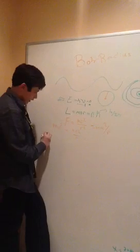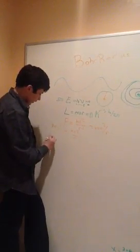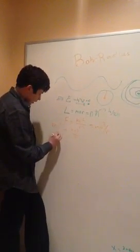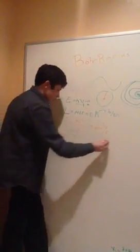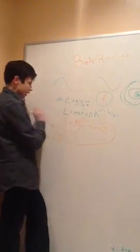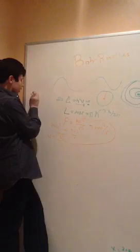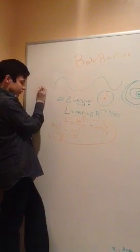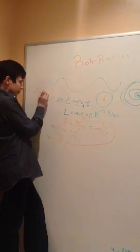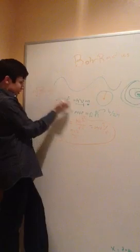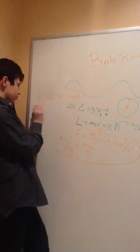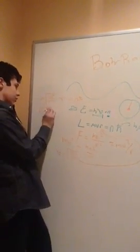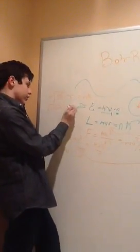So, therefore, we get the velocity is root k e squared over mass times radius. You can plug it in there, and we can get the mass times the square root of k e squared over mass times radius times radius, just subbing in for the velocity and angular momentum, is n h bar. And, so, we get the square root of m k e squared r, which is n h bar.